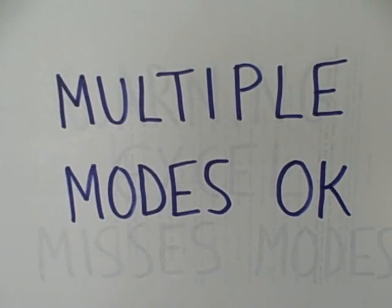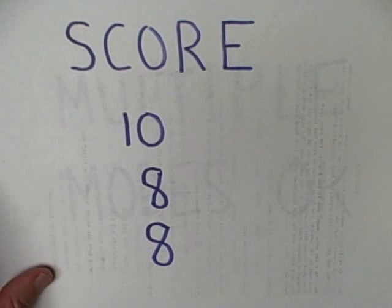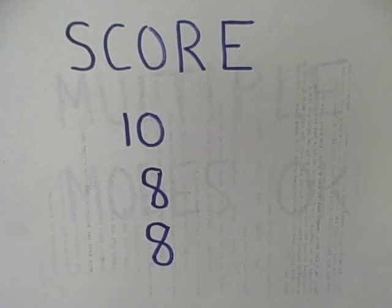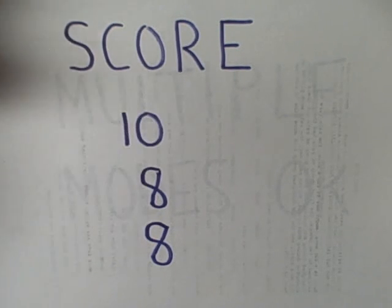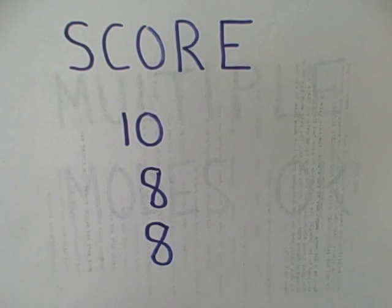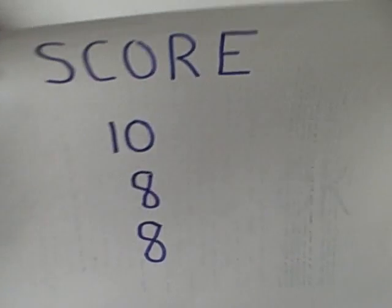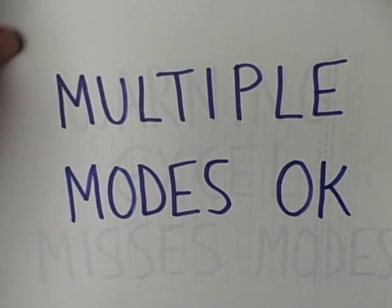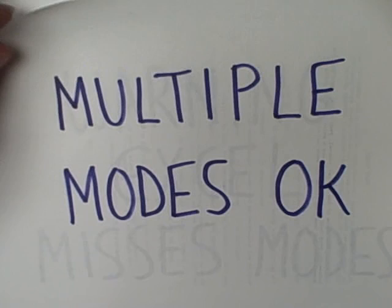It is possible to have a data set in which we have multiple modes. Going back to our first example, suppose we have another person making this a sample size of 4, and that person also scores 10. That would make both 10 and 8 multiple modes. So it is okay to have multiple modes, okay to have no mode, and okay to have one mode.